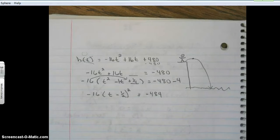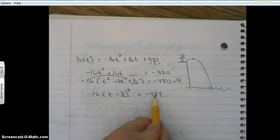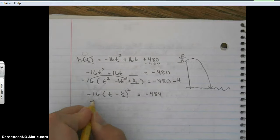Now we're not trying to solve this, so we're going to move that minus 484 back over here so that way we're in vertex form.